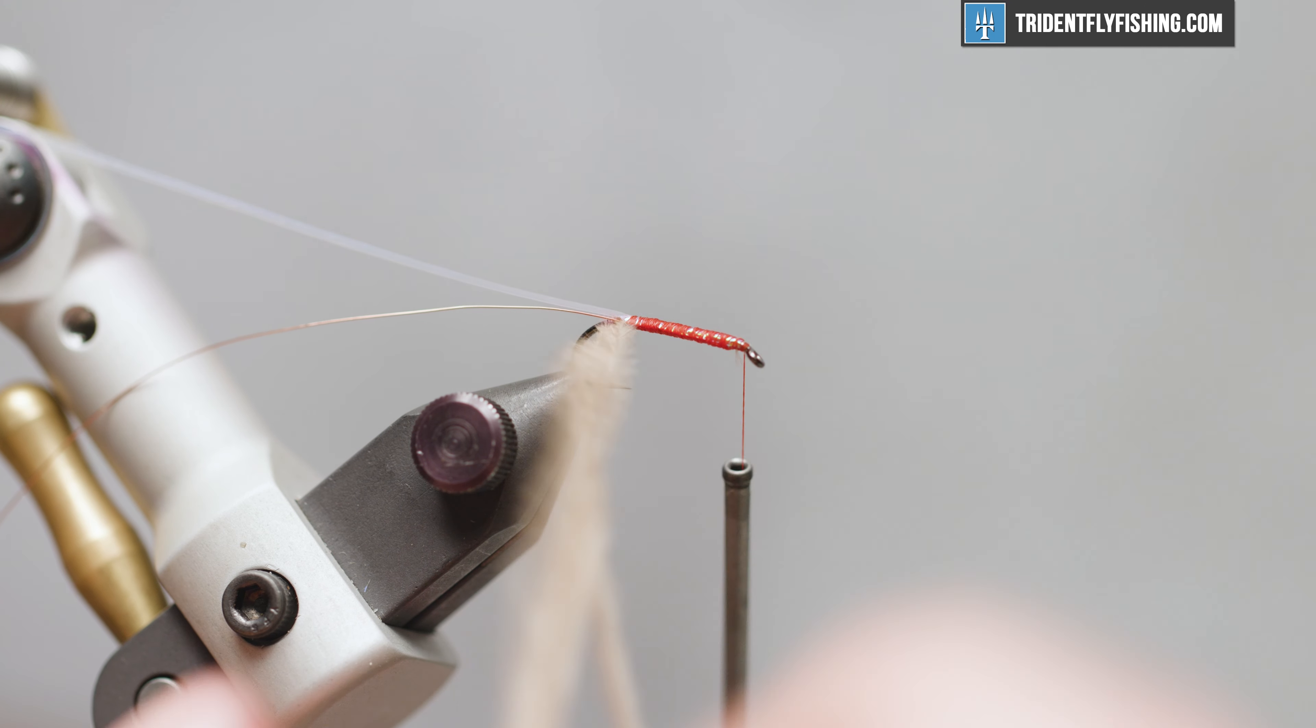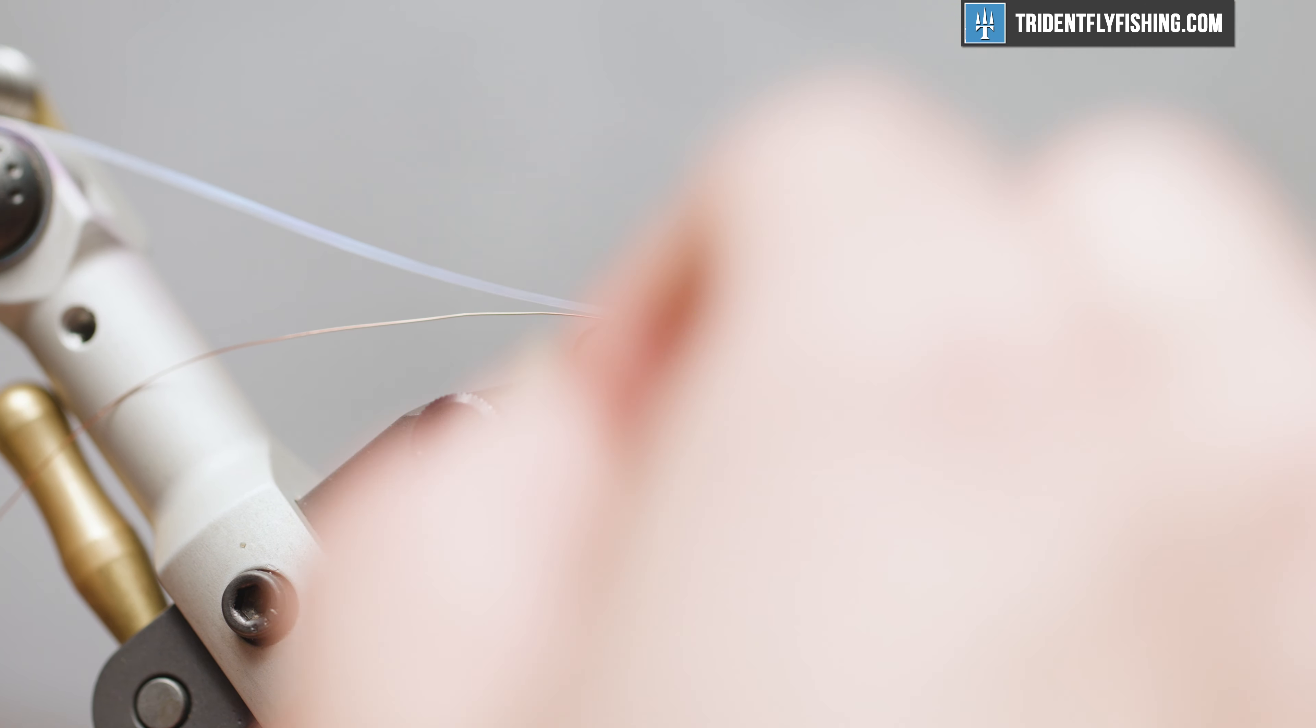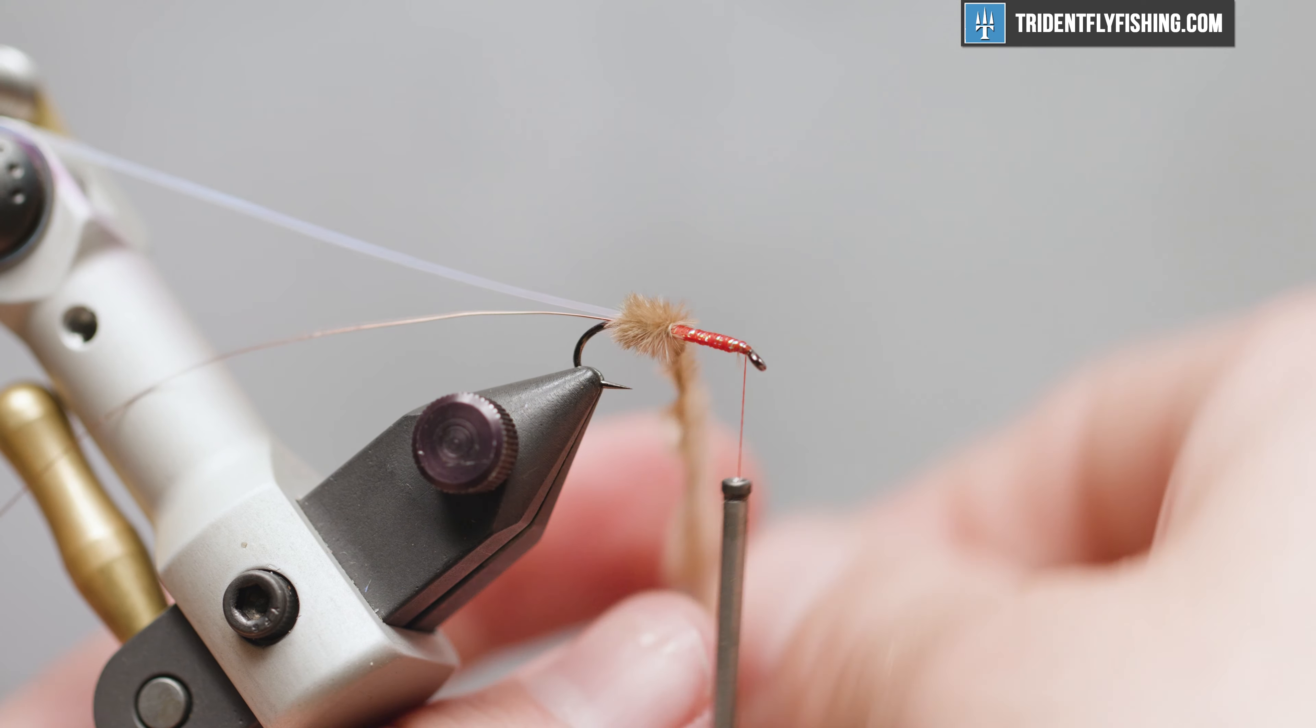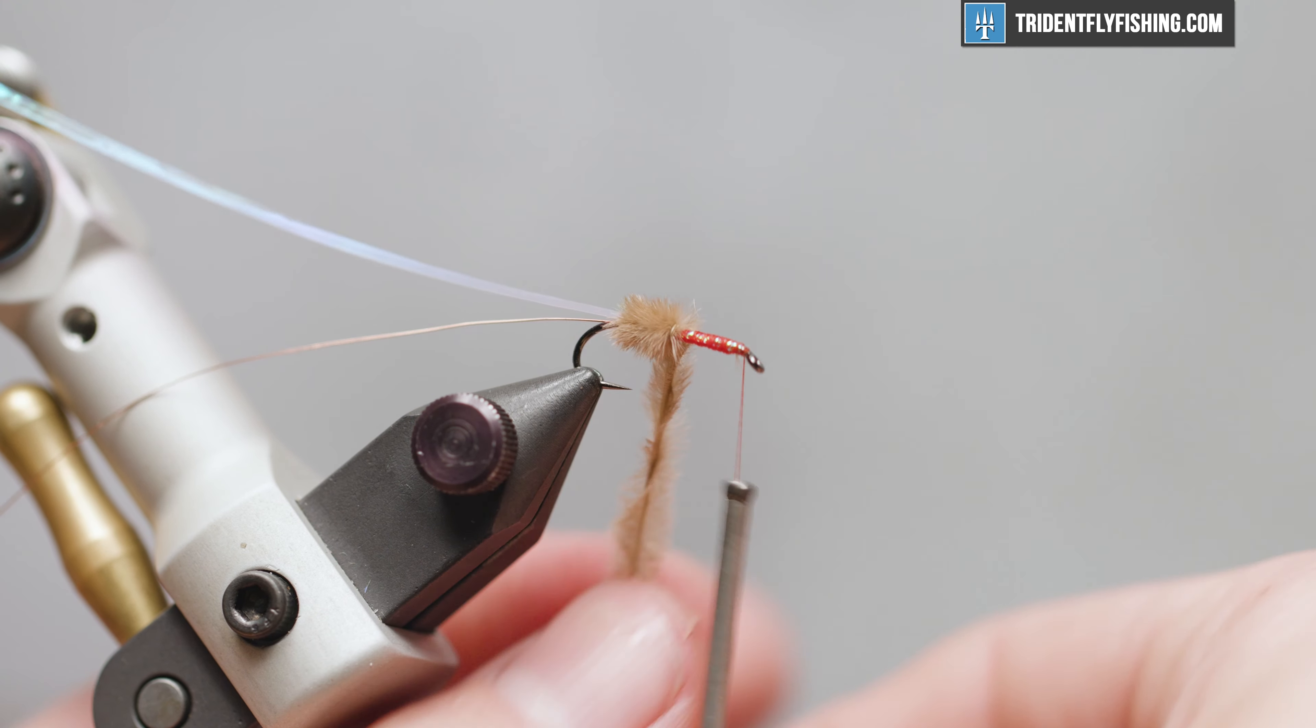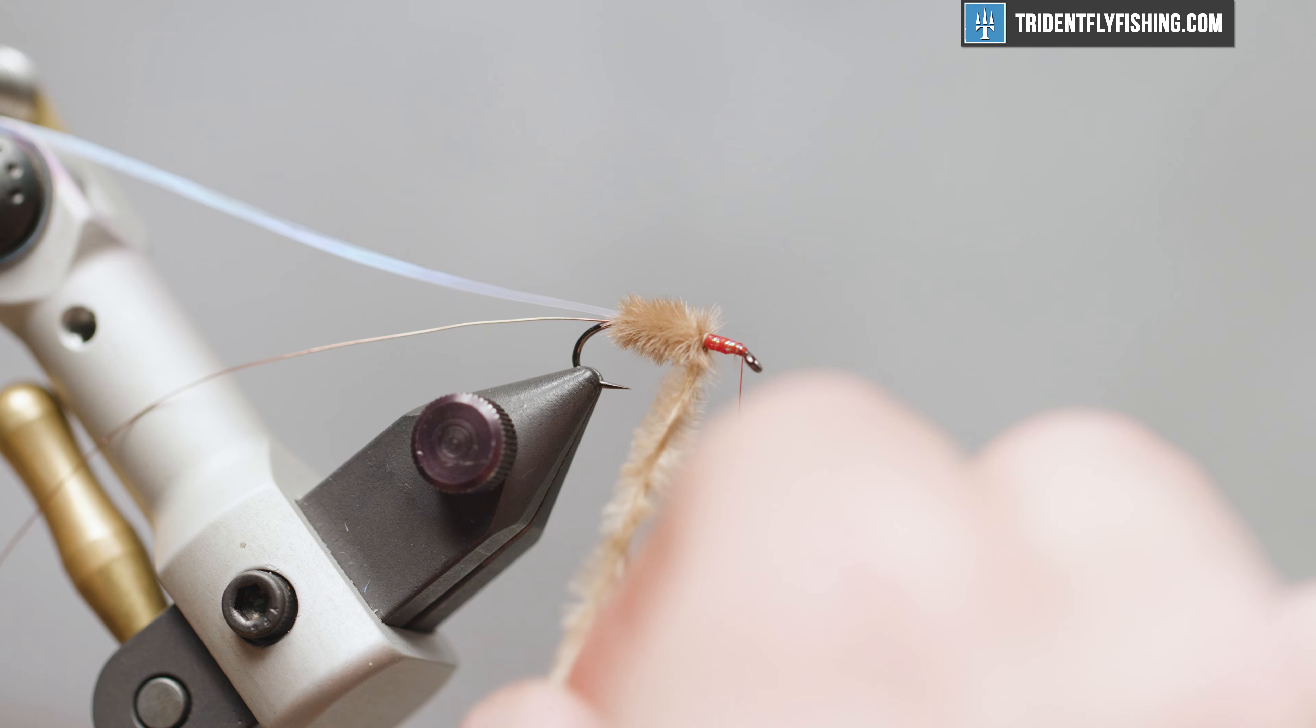Now we're going to come in with our ostrich hurl and wrap it - nice, neat wraps, side by side. You want to take it all the way up to just behind the eye. I'm using tan ostrich right now, but this is a fly you can tie in whites, grays, even a light peach, anything that matches those natural scuds and sow bugs in your area.